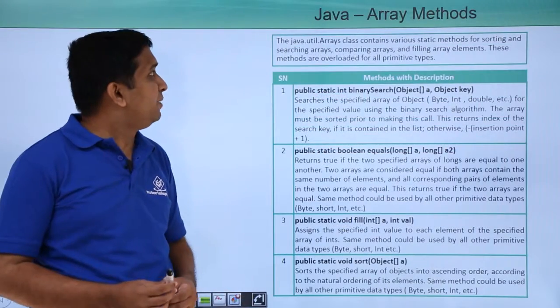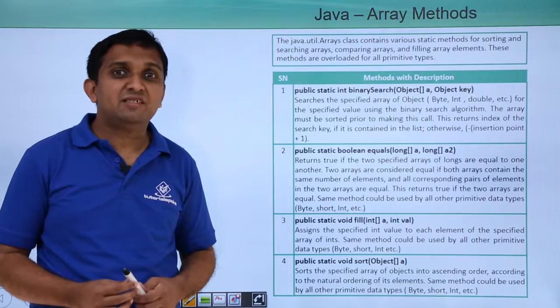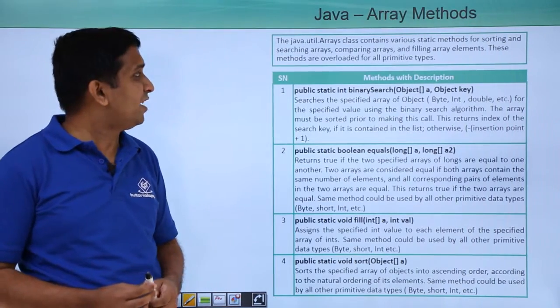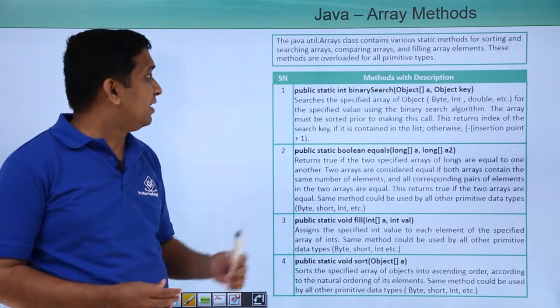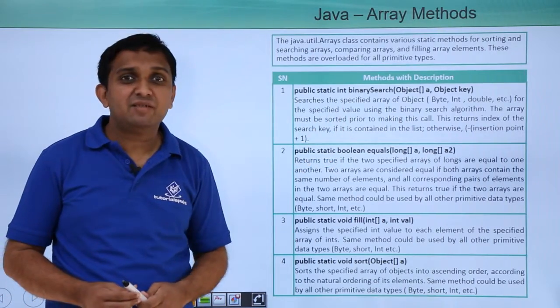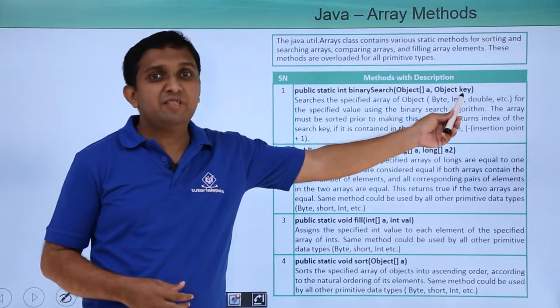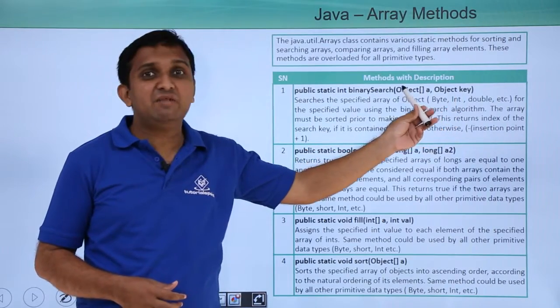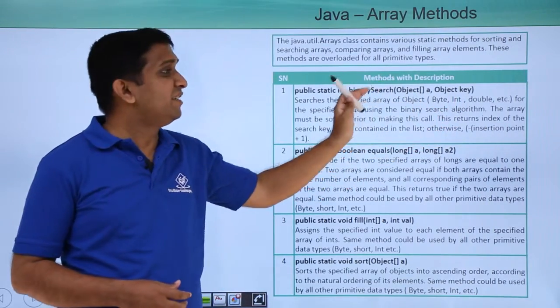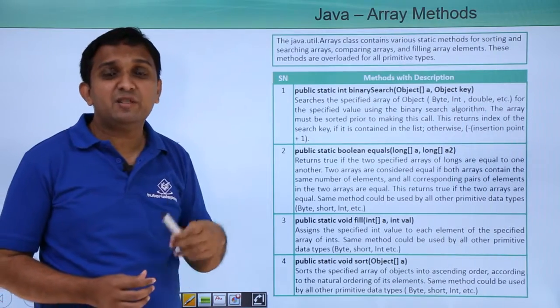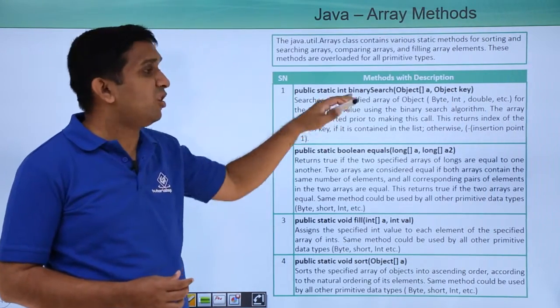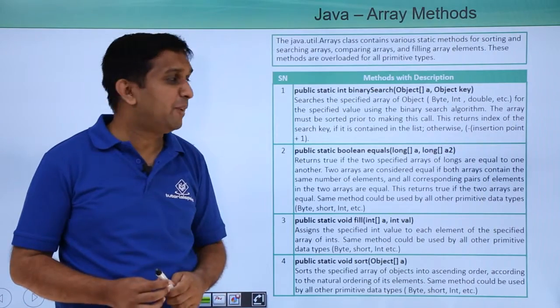In the java.util package, there is one class which is the Arrays class. That class has some static methods, a few of them are mentioned here. There is one method, binarySearch. Binary search will search the particular element which is mentioned by the key in the given array. For binary search, the array is supposed to be sorted, so you need to sort the array before you call this method.